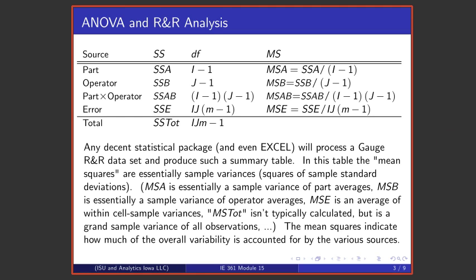Those mean squares are the sums of squares divided by degrees of freedom. Basically, although the table doesn't usually include a mean square for total, if one took the sum of squares for total and divided it by that degrees of freedom, one would have the sample variance of all the data values.